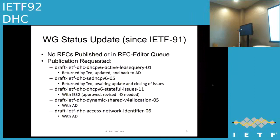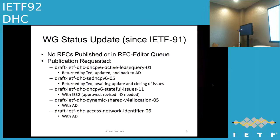The secure DHCPv6 draft was also returned by Ted. I think we're now done with the issues there and it should be ready to go back. We may have one final tweak — I think it's the 07 version. Do go take a look at that because if you had any concerns about some of the discussions, we do want to get that document moved forward. We also have the dynamic shared v4 allocation and the access network identifier drafts sitting with the AD, although I'll have to follow up with Brian on what's going to happen with those.